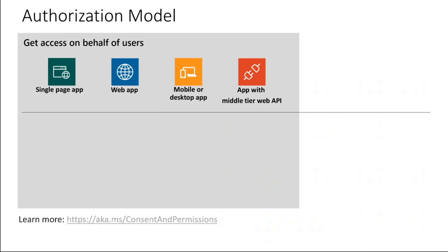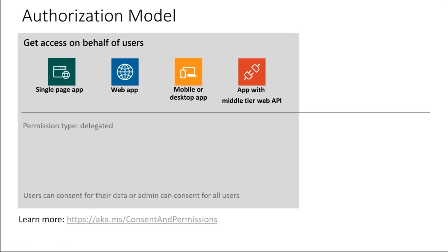There are two types of permissions. When an application accesses an API on behalf of a user, the permission required is termed delegated permission. For any application with a signed-in user — single page apps, web apps, mobile or desktop apps, and applications with middle-tier web API — the permissions required are delegated permissions. As there is a signed-in user present, these permissions can be consented either by users or by the admin, and that is completely up to the API developer on who can actually grant consent.